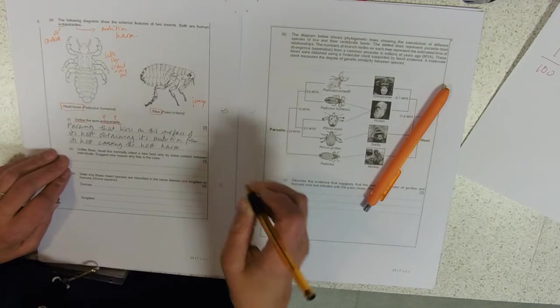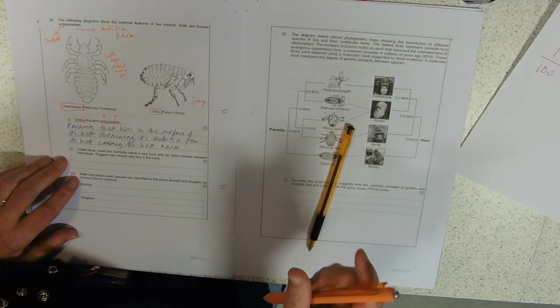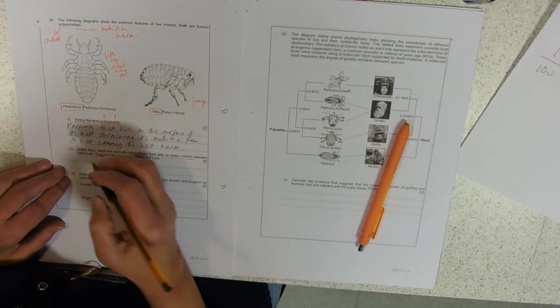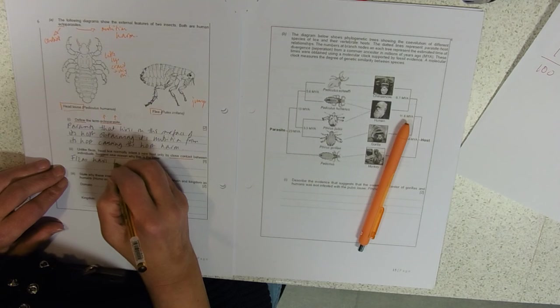Unlike fleas, head lice normally infest a new host, going from host to host, only by close contact between individuals. So just one reason for that. Fleas have long legs and can jump.